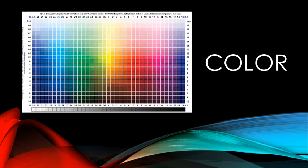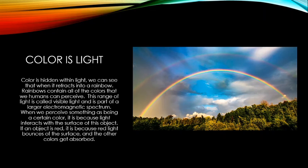We all know what color is on a surface level — we learn it as little kids. But what exactly is color? Color is light; color is hidden within light. We can see that when light refracts into a rainbow — sunlight breaks up through moisture droplets in the air, and the colors hidden within white light refract out in those beautiful arcing patterns.